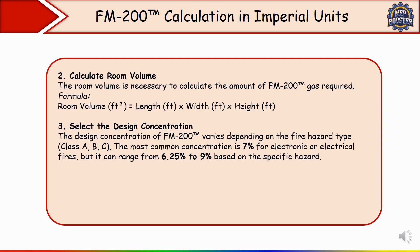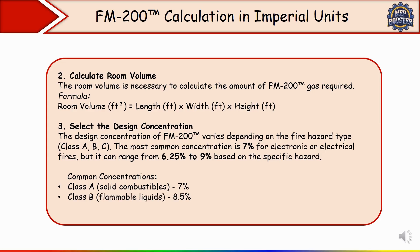The most common concentration is 7% for electronics or electrical fires, but it can range from 6.25% to 9% based on the specific hazard. For Class A fires, normally 7% design concentration is considered. For Class B fires involving flammable liquids, 8.5% is used. For Class C fires, 7% is used. So normally the most common concentration is 7% — remember this for electronics or electrical fires.